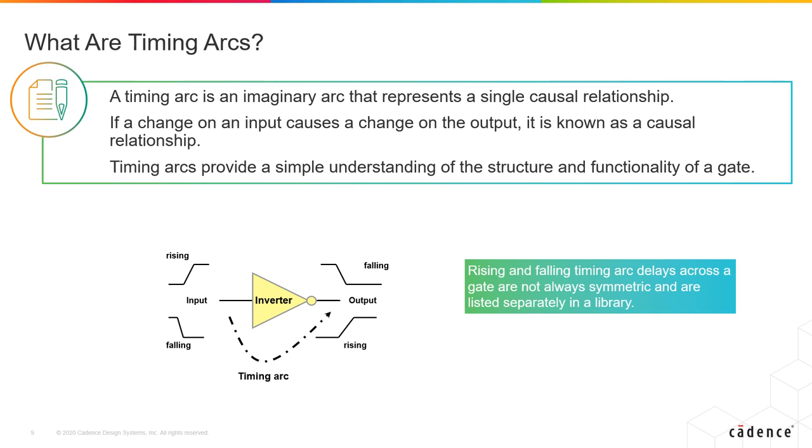Each of these imaginary arcs between the input and the output is called a timing arc. It's important to understand timing arcs so that you can determine the path delays correctly because not every arc is symmetric. The rising to falling arc is probably not the same as falling to rising arc.